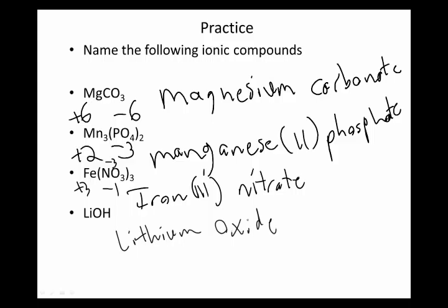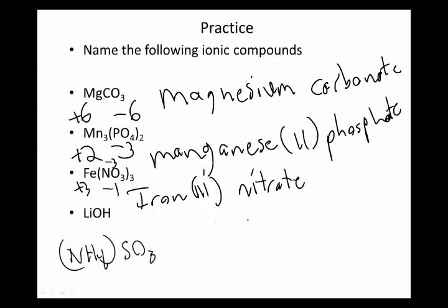We can sometimes encounter compounds where we have two polyatomic ions, like ammonium sulfite. We just name the cation, and then we name the anion, and that's all there is.